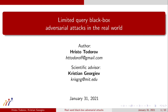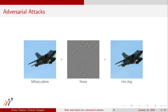The term adversarial attacks was first introduced in 2014. The main idea is that a given input image that is correctly classified by a deep neural network can be modified so as to be misclassified by the same network. As you can see in the figure, an image of a military airplane is modified by adding specially selected noise to it and then classified as a hot dog. Unfortunately, the perturbations applied are usually imperceptible to the human eye.